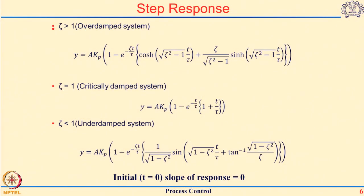Here is the summary of the expressions derived for the step response of a second order system. Depending on whether we are in the regime of overdamped, critically damped, or underdamped response, we get these types of responses. The nature of these expressions is very similar: the first term AKP gives the ultimate value, then a constant 1, then a decaying function e to the minus zeta t over tau, and lastly either a hyperbolic cosine, sine, or a linear function, or a sinusoid of the form sine of root of 1 minus zeta squared times t over tau plus phi.